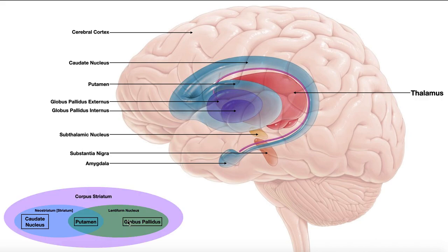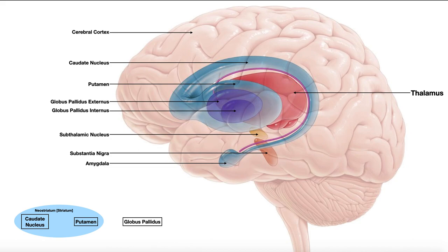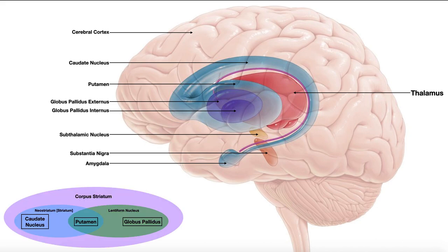If we group all three together — caudate nucleus, putamen, and globus pallidus — that is the corpus striatum. You have to be careful with this terminology because each grouping is composed of different combinations of structures. To reiterate: the neostriatum or striatum is caudate nucleus and putamen; the lentiform nucleus is putamen and globus pallidus; and the corpus striatum is all three of them.